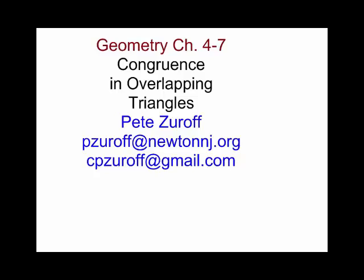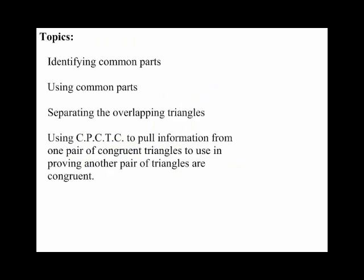This is Geometry Chapter 4-7, Congruence and Overlapping Triangles. We're going to identify what common parts are involved with overlapping triangles, use those common parts, and then separate the images of the overlapping triangles. In the last example, we're going to use CPCTC — corresponding parts of congruent triangles are congruent — to pull information from one proven pair of congruent triangles and apply it to a second set.